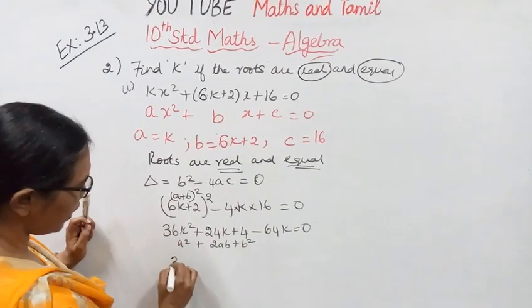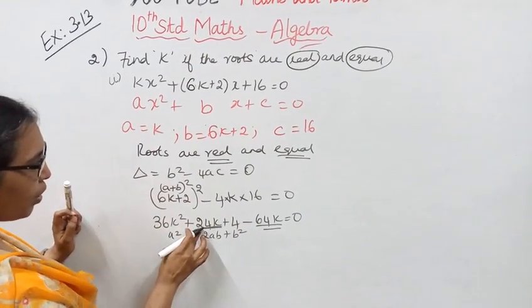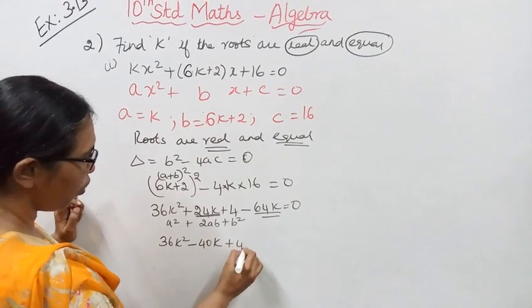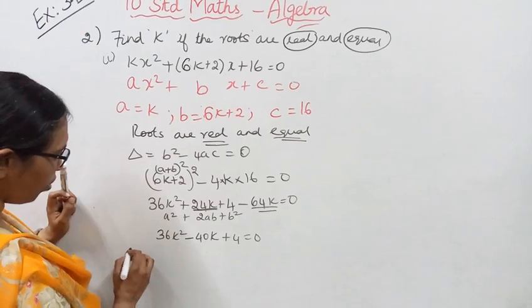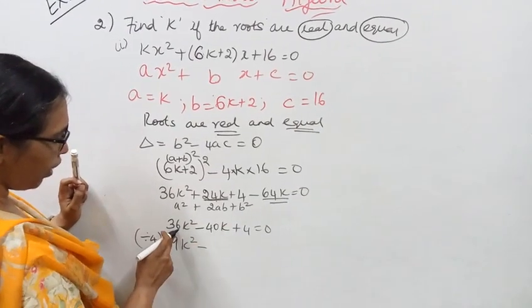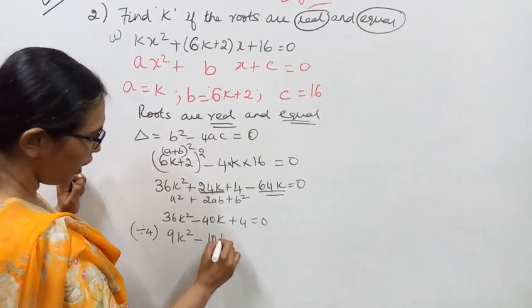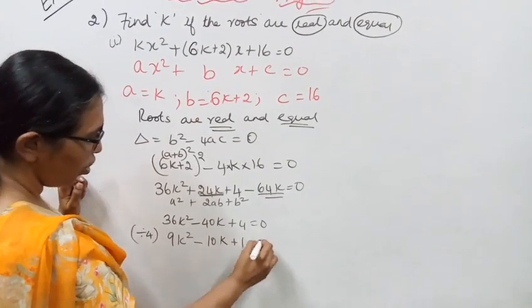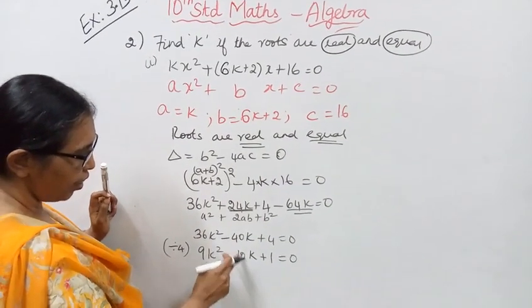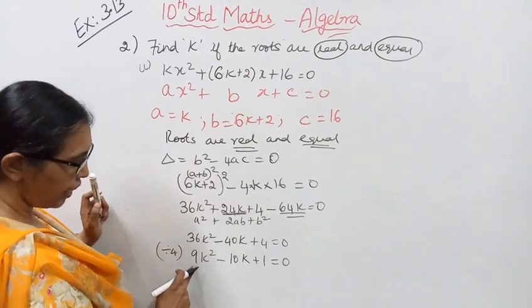Simplifying: 36k² + 24k + 4 - 64k = 0. Dividing everything by 4: 9k² - 10k + 1 = 0.